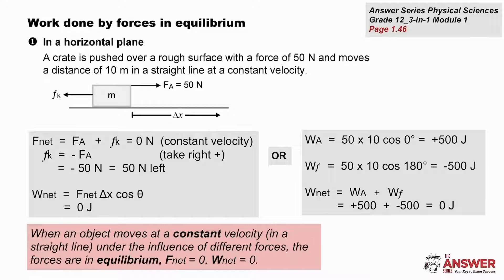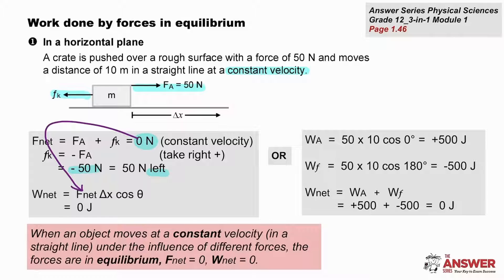If we have an object on a horizontal plane moving from left to right with an applied force opposed by a frictional force at a constant velocity, then the net force is zero. If the applied force is 50 newtons, then the frictional force must also be 50 newtons, but in the opposite direction to the left. Because the net force is zero, when we substitute that value into the work formula, we get a net work done of zero joules.